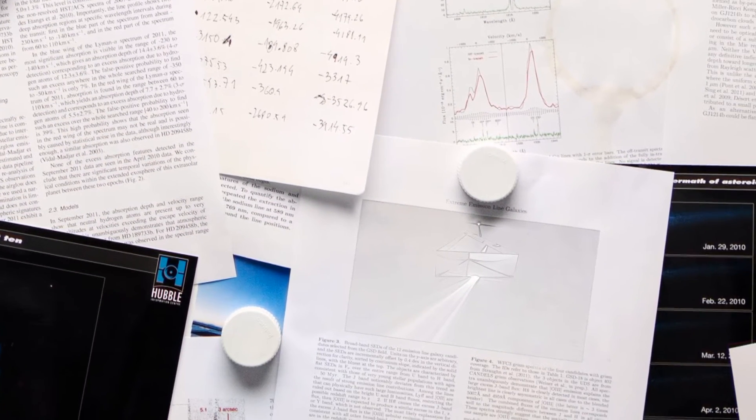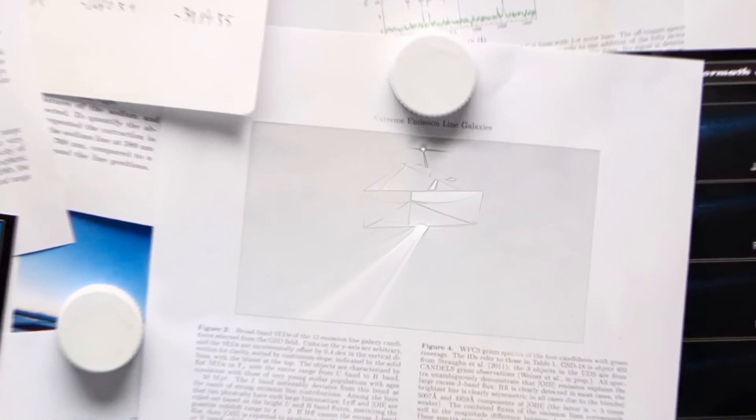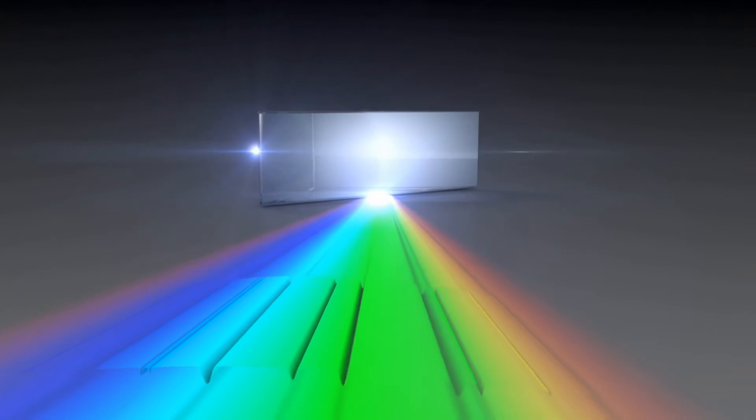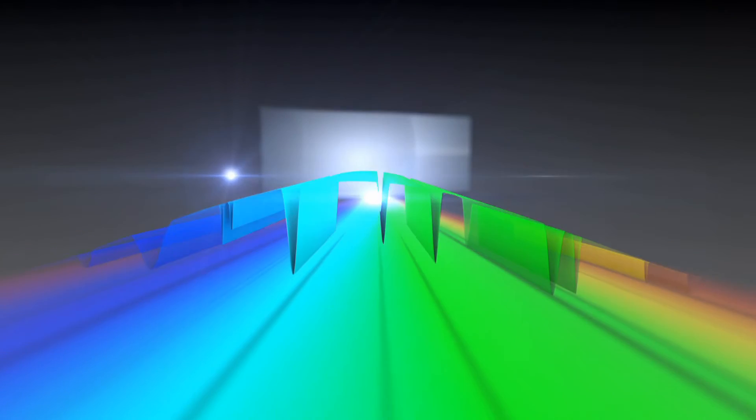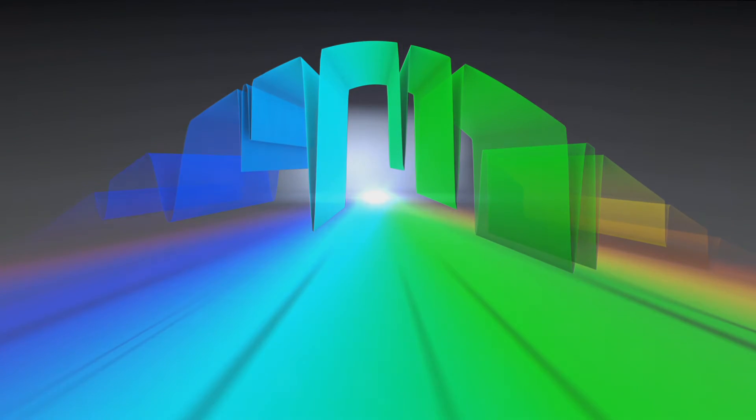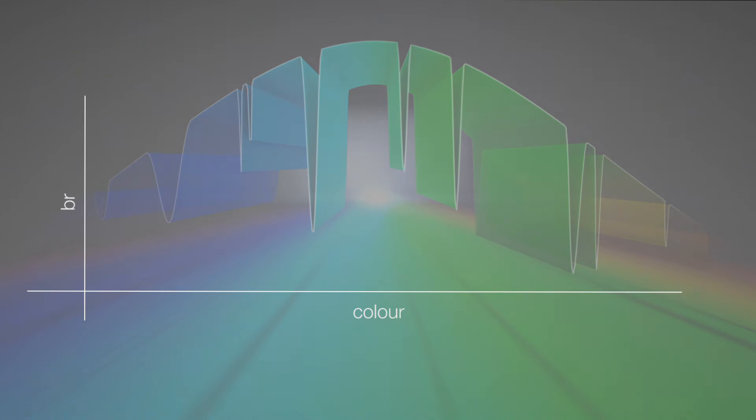But the graphs are simply a way of showing the brightness of the different colours in the light coming from an object. The subtle differences in brightness and darkness can reveal a huge range of information, including the chemical composition, temperature, movement and distance of the object.